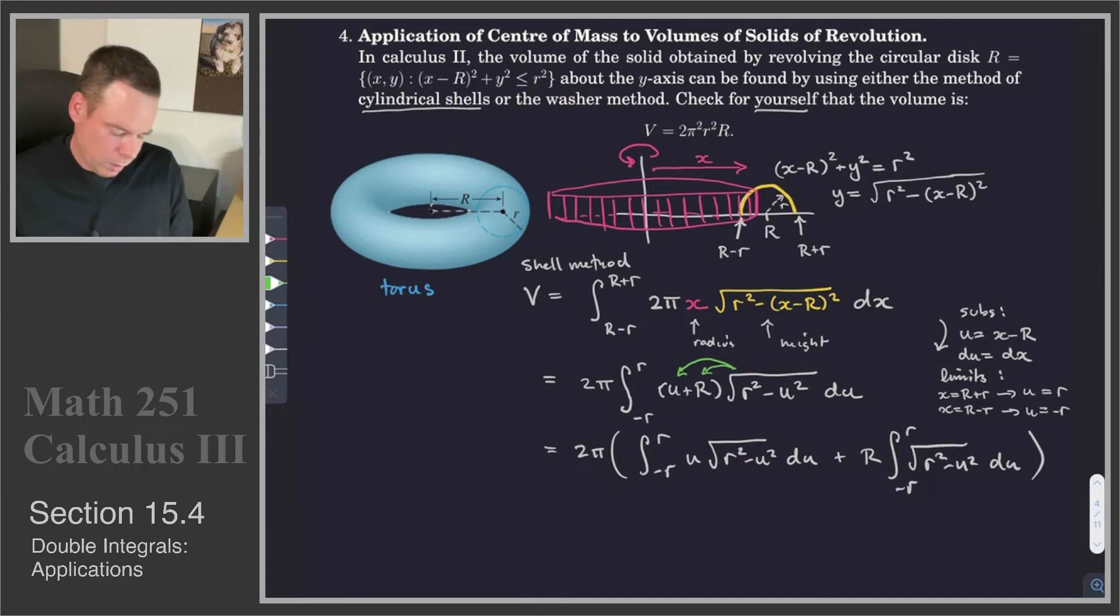Now we want to compute these two integrals. First thing we note is that this one is zero. Why is that zero? It's an odd function, and we're integrating it over a symmetric interval about the origin from -r to r. It's an odd function because if you evaluate at u, you get the negative of the value at -u. So these are very quick things. Noticing symmetry is very important to eliminate a lot of extra work.